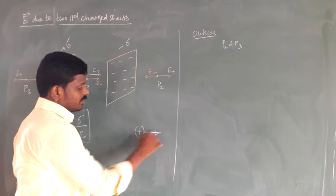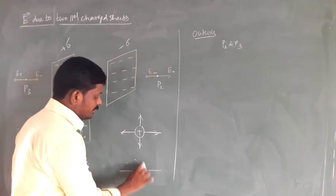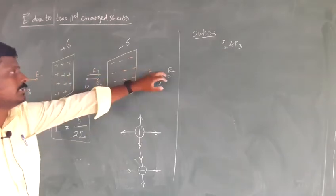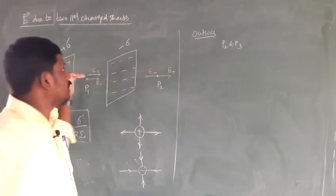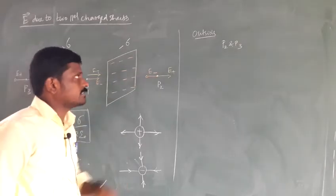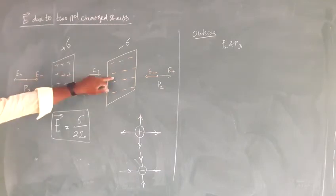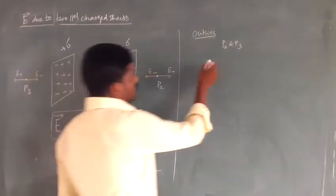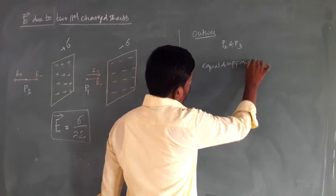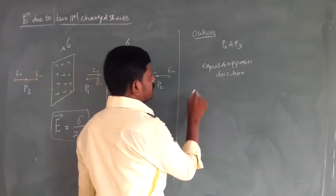Electric field due to the positive charge is outwards. If it is a negative charge, the electric field points inwards. So due to the positive charge at point P2, electric field E plus points outwards. At point P2, due to the negative charge, electric field points towards the plate. So E plus and E minus are in equal and opposite directions — they cancel each other outside the plates. So electric field is zero outside.